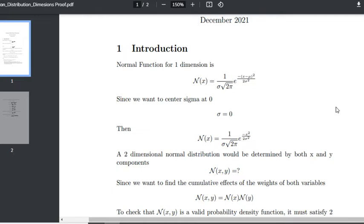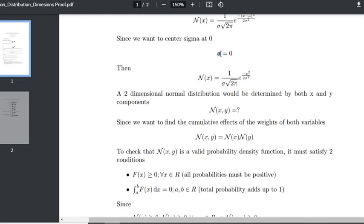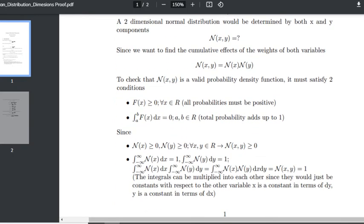But that's the equation for the one-dimensional curve, one-dimensional normal distribution. We want to find the equation for the two-dimensional normal distribution curve. First we want to center the mean at zero. All we really need to do to change it to two dimensions is actually just multiply the weights of an x normal distribution curve by a y normal distribution curve. We're just combining two normal distribution curves together.